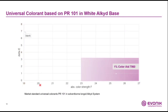Here is an example showing Delta E and color strength. Without compatibilizer — the blank — the Delta E is almost 7, which is very high, and the color strength is of course very low. When we add 1% of TEGU Color Aid 7060, the Delta E is now lower than 1, giving very good color acceptance, and the color strength is much higher.